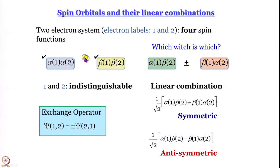Before going there, what we have learned so far is about spin orbitals. Let me define a spin orbital: a spin orbital is a one-electron wave function incorporating the spin part. It is important not to forget that an orbital is, for the nth time, a one-electron wave function. A spin orbital, in addition to having the spatial coordinates for this one-electron wave function, also has the spin part.